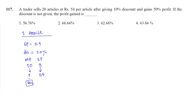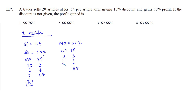He earned a profit of 50%, which is 1/2, giving us a ratio of cost price to selling price. If cost price is Rs 2, profit at 50% is Rs 1, so selling price becomes Rs 3. The selling price is Rs 54, so 3 represents 54, meaning multiplied by 18. So 2 represents 2 into 18, which is Rs 36. The cost price of one article is Rs 36 and the marked price is Rs 60.